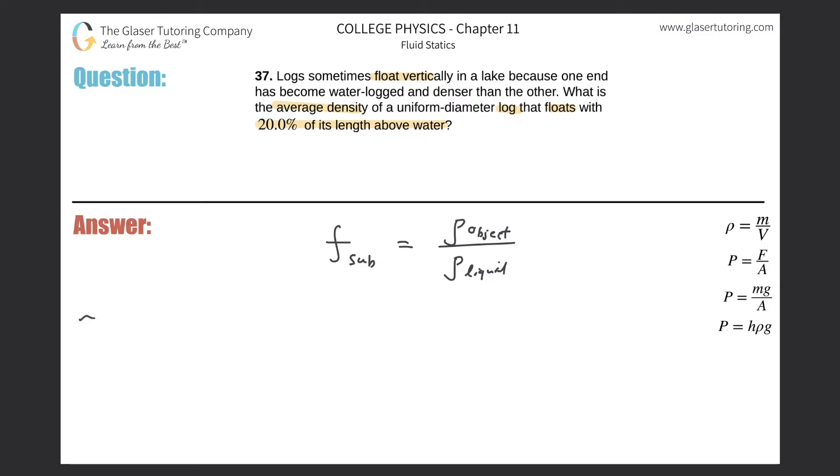For example, pretend here's your water line, and this is the log. The problem told us that 20% is above the water. Well, let me ask you a question: how much is below the water? This was simple, right? 80%. How did you know that? Well, if we're talking about the whole log and the whole log is 100%, and if 20% is above the water, then the remainder 80% has to be below. Exactly.